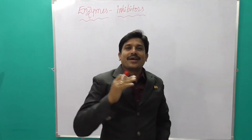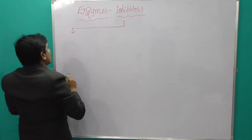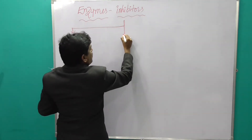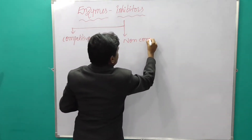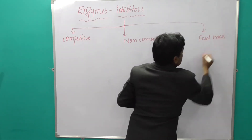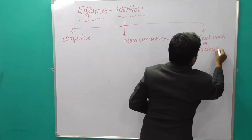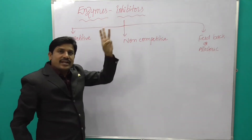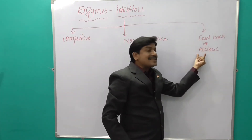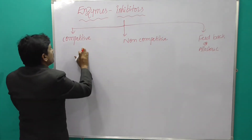Let us discuss enzyme inhibitors. These enzyme inhibitors are of three types: the first type is competitive inhibitors, the second one is non-competitive, and the third one is feedback inhibitors, also called allosteric inhibitors. So let us see the first type — competitive inhibitors.